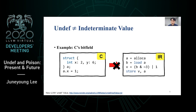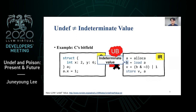You may wonder whether undef is equivalent to the indeterminate value. Conceptually they are similar — both represent an uninitialized value. However, there is an important difference. Consider a struct variable A with two bit fields x and y, which are 2 and 6 bits respectively. To write one to bit field x, the IR loads one byte, masks away the two bits, marks bit 1, and stores the whole byte back. If A had an indeterminate value, loading it would immediately raise undefined behavior, which is not what we want.